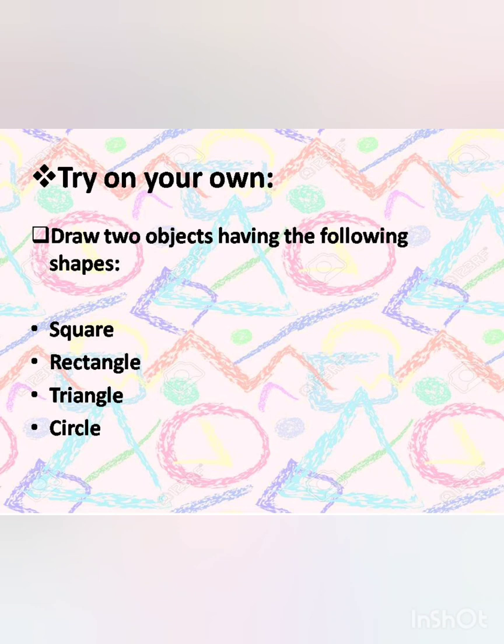Try on your own. Draw two objects having the following shapes: two objects having square shape, two having rectangle shape, two having triangle shape, and two objects having circular shape. Try not to repeat the objects that I gave you as examples. All the best. Have fun!